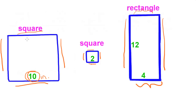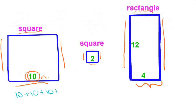To find the perimeter of the square, you have to add all four sides together. The perimeter is the distance along the outside. So in order to do the perimeter of a square, you'd have to add 10 plus 10 plus 10 plus 10.